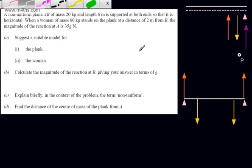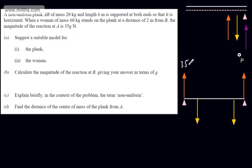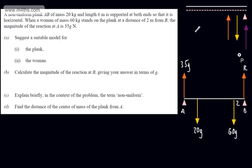Let's consider labelling up the forces. So what we've got is 35g Newtons at A, 20g Newtons — that is the weight of the plank — and 60g Newtons — that is the weight of the woman, at a distance of 2m from B, where we've got a normal reaction force which I'm going to call R. So weight equals mass times gravity in Newtons. All I've done is assign those values to the woman and the plank.